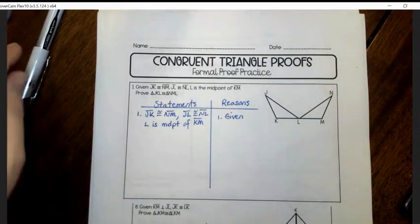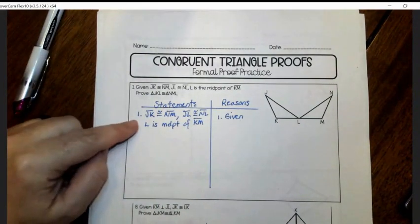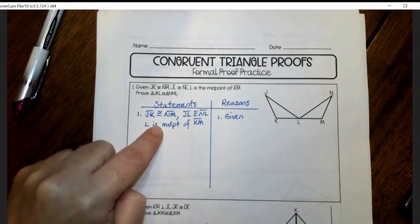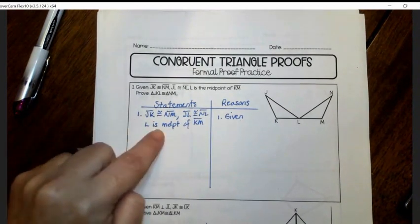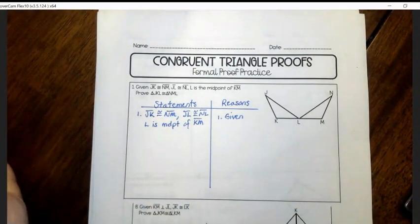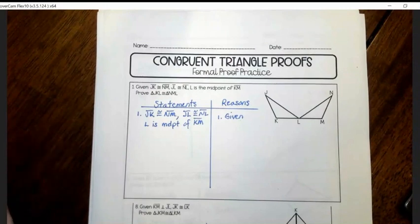Now, it's possible sometimes in proofs they will separate the given information. So this would be step one and this part would be step two. So you'd have another step here. And then number two here would be given. But that's just a matter of style. I prefer if it's all together.